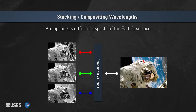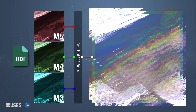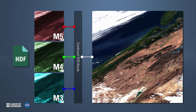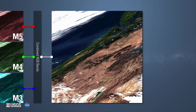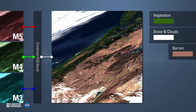Band stacking can be done in most types of geographic information system software. The band combination M5, M4, M3 creates a true color image and is a representation of how the human eye would see the area. Here is a view of the Northwestern United States using the M5, M4, M3 band combination. Vegetation is shown as green, snow and clouds as white, and barren areas are tan or brown.